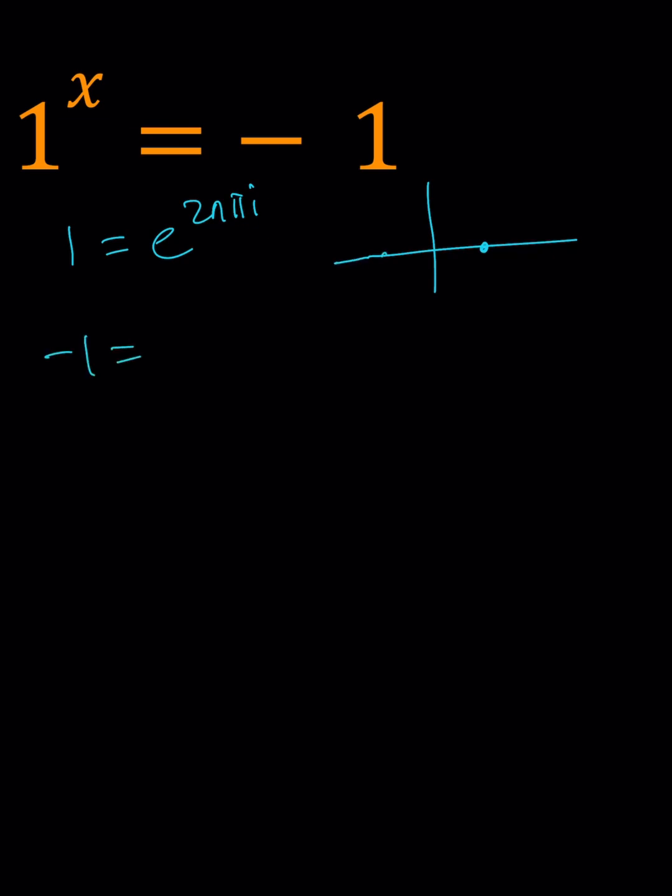And negative 1, since it's going to be on the other side, the angle is going to be pi for that, so we can write it as e to the power pi plus 2k pi i. We should always add multiples of 2 pi.